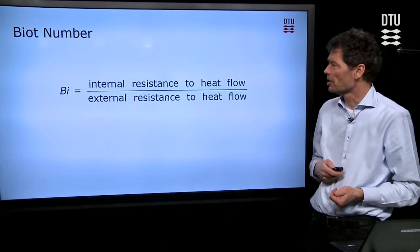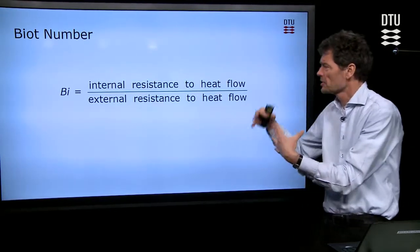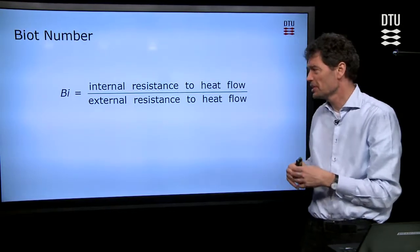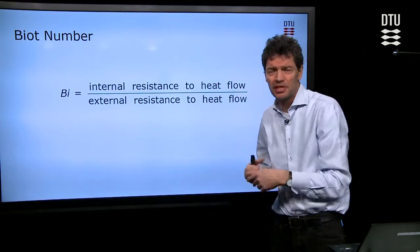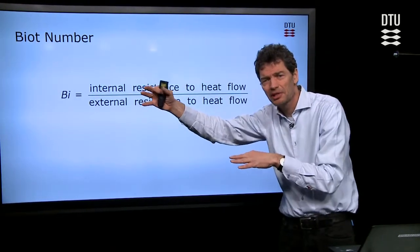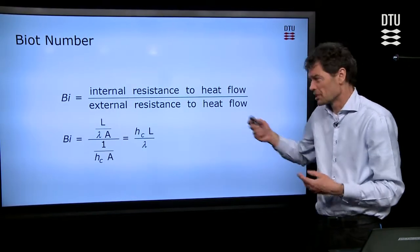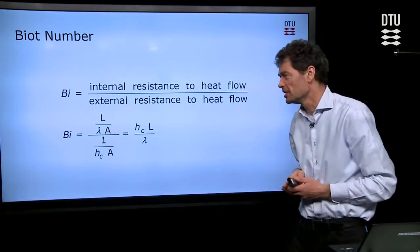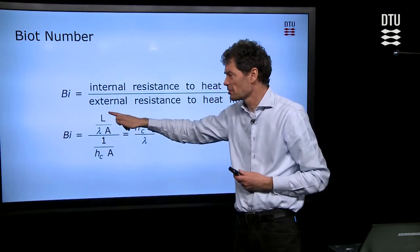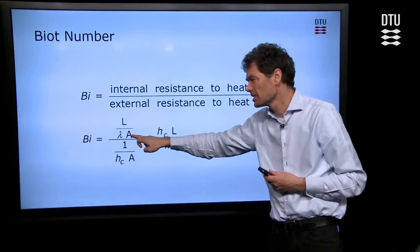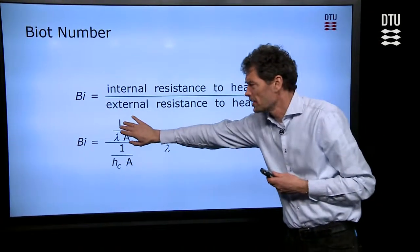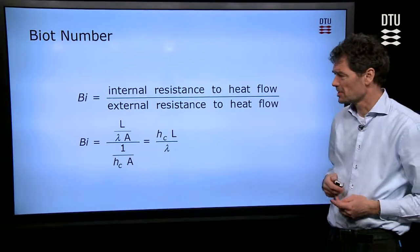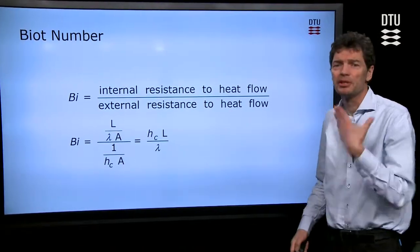The Biot number is a matter of, for that lump of material, what is the resistance to heat flow within the lump, within the material, as compared to the resistance for heat transfer from the surroundings towards the surface of the material, the external resistance. We can put some calculations to it and write the Biot number more simply.